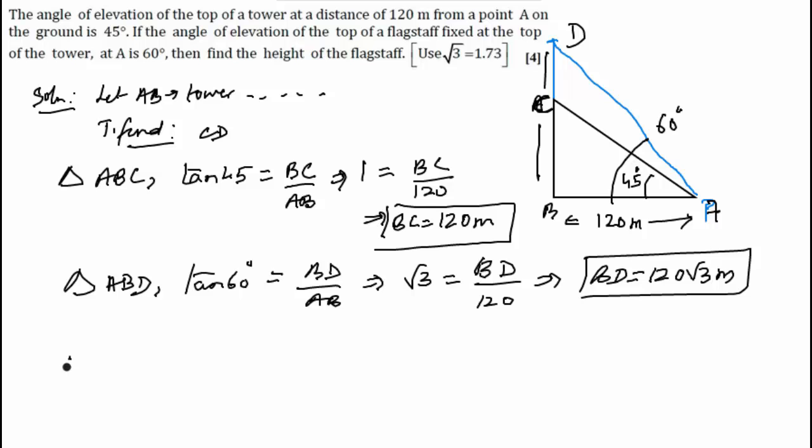And we'll find out CD by subtracting. Therefore CD is equal to BD minus BC, 120 root 3 minus 120 meters, which is 120 times root 3 minus 1 meter. On simplification this gives us 87.6 meters, which is the answer.